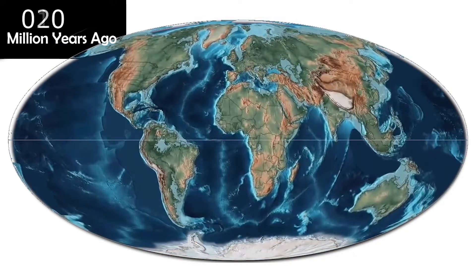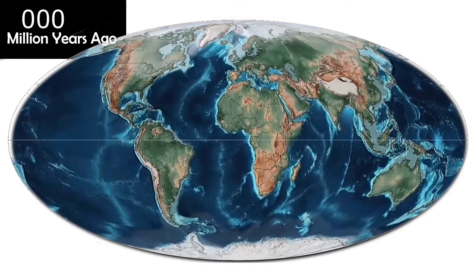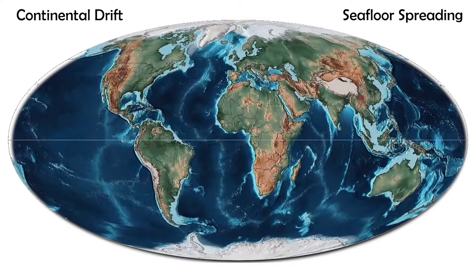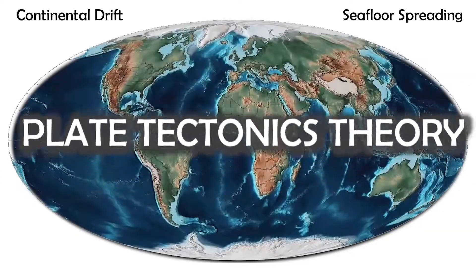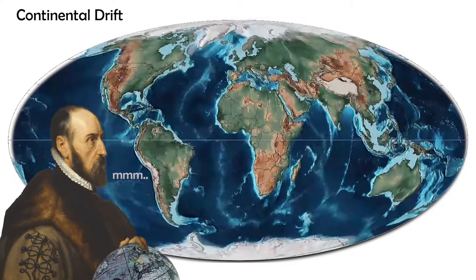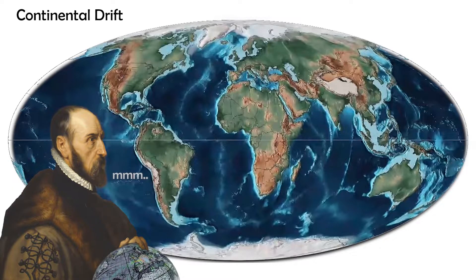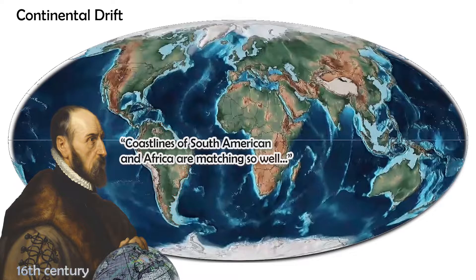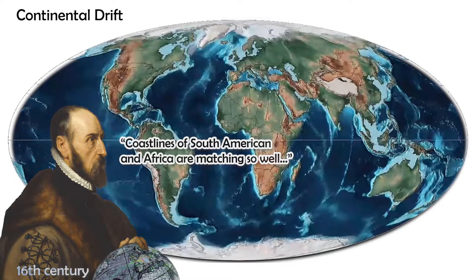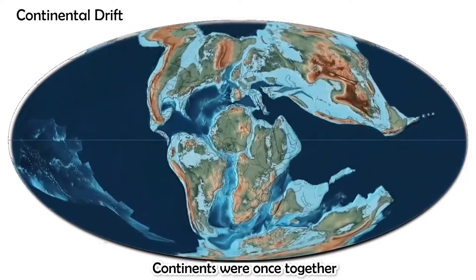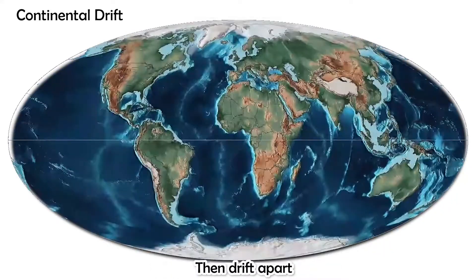In this video, we'll learn how scientists pieced together how continental drift and seafloor spreading shaped the solid surface of our world, leading to the development of the theory of plate tectonics. Scientists saw evidence for continental drift first. Since the 16th century, mapmakers noticed the jigsaw puzzle fit of the coast of Africa and South America, which suggested to some that these two continents were once together and had since drifted apart.